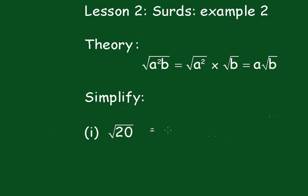Now, obviously, the perfect square here is 4, so that's equal to 4 times 5, which is, of course, the square root of 2 squared times the square root of 5, which equals 2 root 5 as your answer.